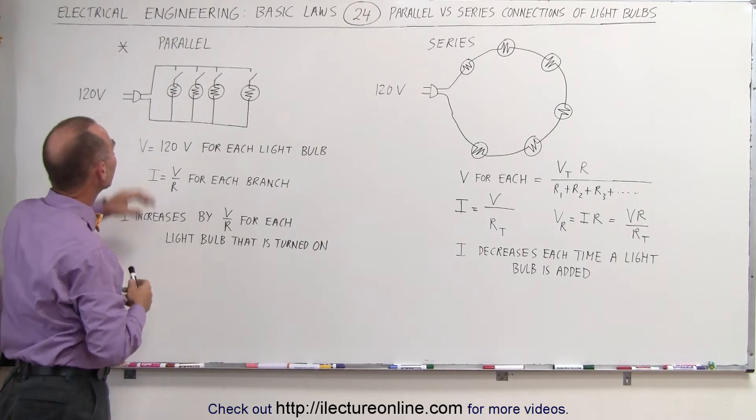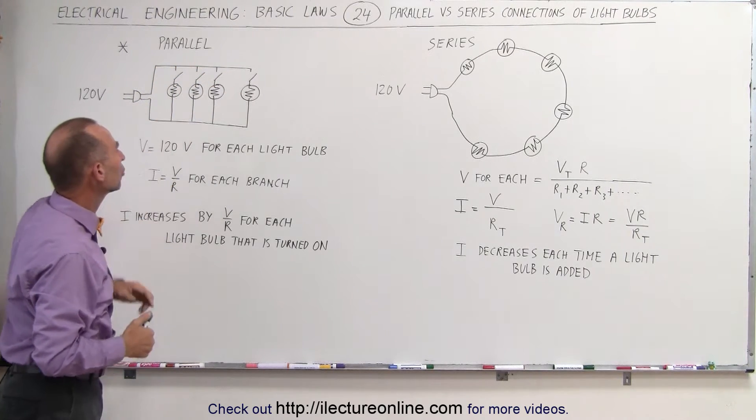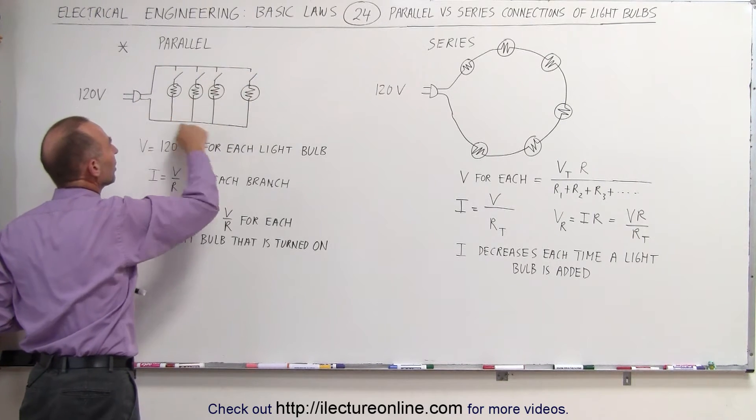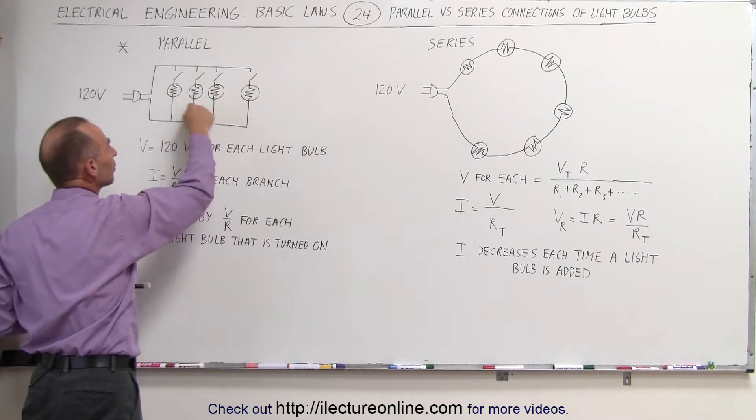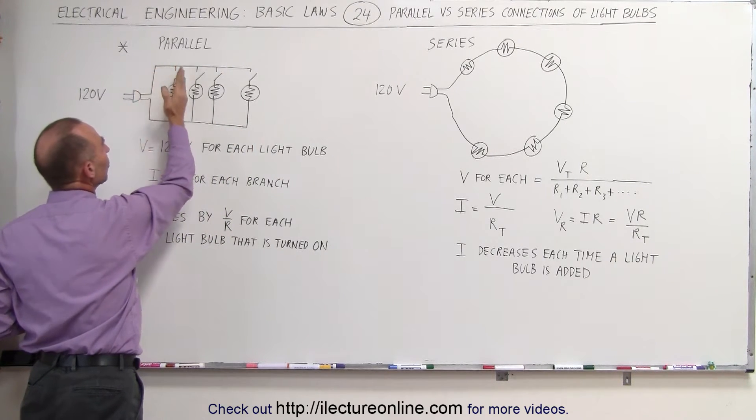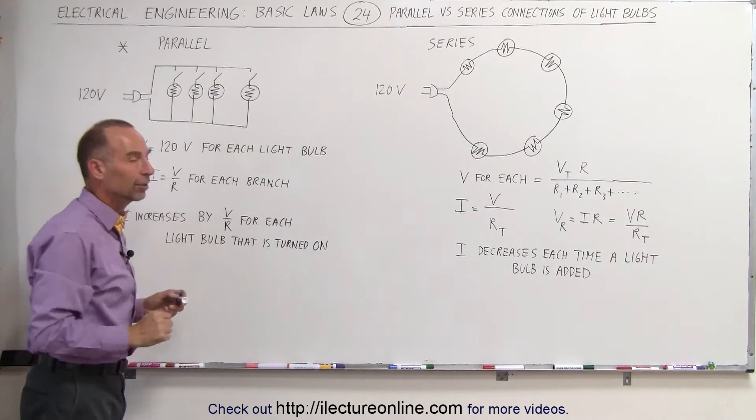Notice that the potential, the voltage across each light bulb will always be 120 volts because one end of the light bulbs all share a common node and the other end of the light bulbs all share a common node. And we know that the voltage across each branch must always be equal and must always be equal to the source to which it's connected.